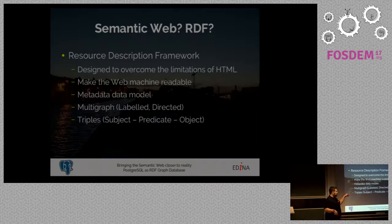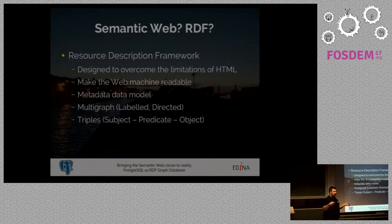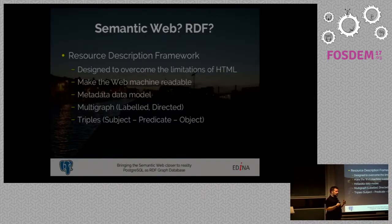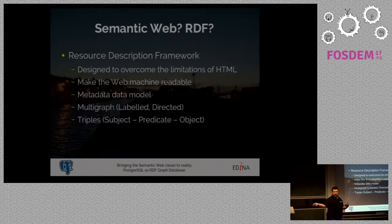Strictly speaking in graph theory, it's a labelled and directed graph, which means that not only do objects have properties, but those properties usually have directions as well. So it's 'person A authored book A' — this is a direction. Whereas you can't go back the other way using the property 'authored', because the book obviously hasn't authored the person.